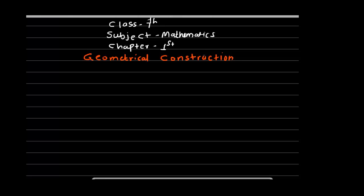Let us recall some points. Number one: what is a point? A point is a tiny dot made by a finely pointed instrument on a sheet of paper. The dot is the symbol for a point. Here is a point — a tiny dot. We give it the name A, so it is called point A and read as point A.